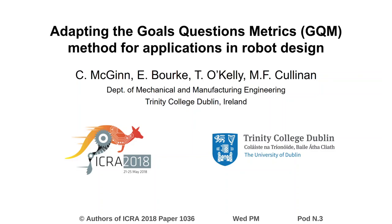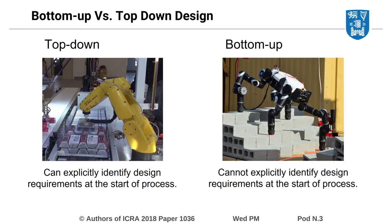Building robots can be a challenging, expensive and time-consuming task that involves many people. Traditionally, design methods have followed a top-down strategy whereby the performance requirements of the robot were explicitly defined at the beginning and then solved through a decomposition process. While top-down methods have high efficiency,